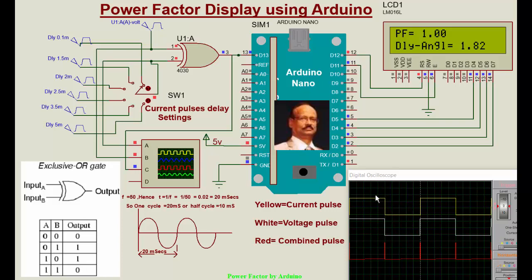We will go on delaying the current waveform and see how the power factor is getting affected. We are using the exclusive-OR gate — one terminal receives the voltage waveform and the other terminal receives the delayed current waveform, at different delay steps.